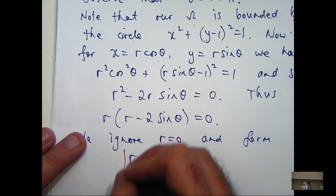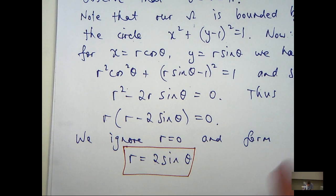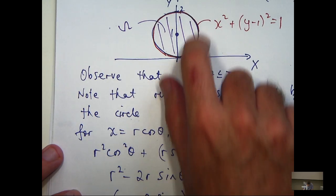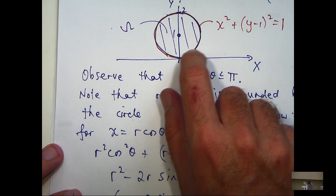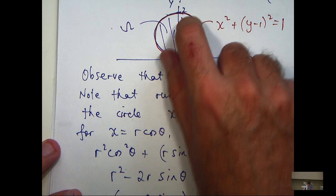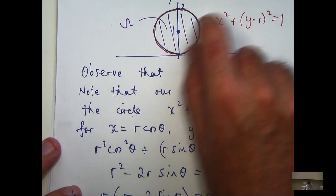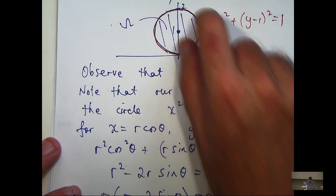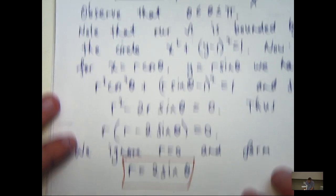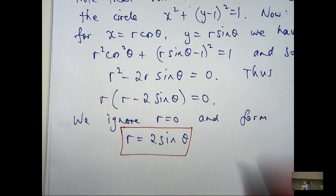So, this is the polar description of this circle here. Now, you can see that r cannot be bigger than, well, it can't cross this circle. So, r has to be less than or equal to 2 sine theta. So, let's put everything together.